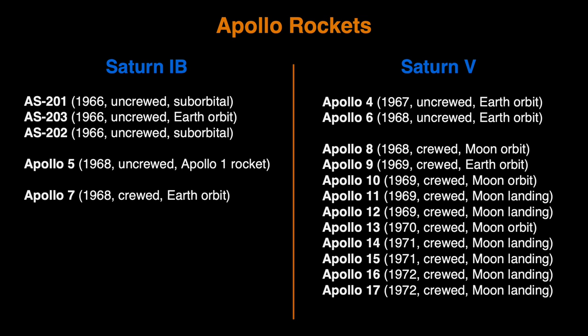Here's a list of all Apollo rocket launches divided by the two Saturn rockets used. There were three uncrewed and unnamed Saturn 1B launches, followed by the uncrewed Apollo 5. Apollo 5 used the Saturn 1B attached to the Apollo 1 spacecraft — that is the mission where Gus Grissom, Ed White and Roger Chaffee died in the fire. Apollo 7 was the only Apollo mission to launch into space using a Saturn 1B rocket. There were two uncrewed Saturn V launches prior to Apollo 8, and Apollo 8 onward all used Saturn V rockets.